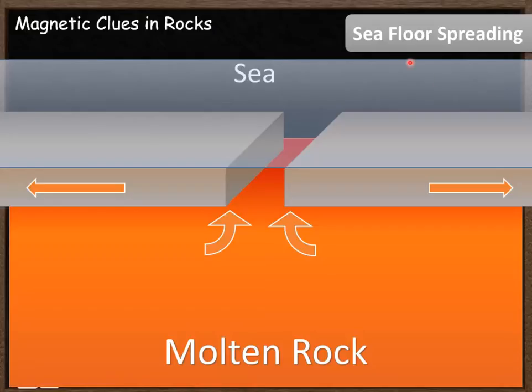We're going to take the example of a seafloor spreading tectonic plate boundary. Between the two tectonic plates there's a gap and into that gap some molten magma is going to rise.